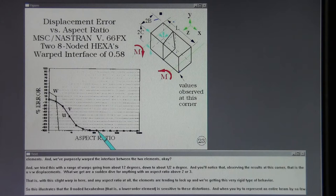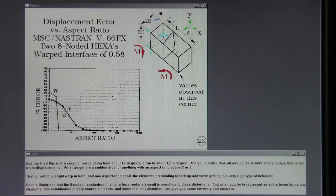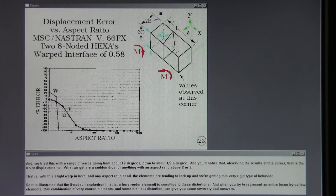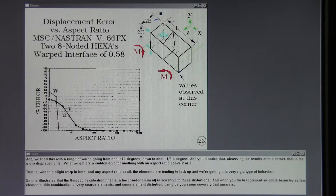So this illustrates that the eight-noded hexahedron, that is a lower-order element, is sensitive to these distortions. And when you try to represent an entire beam by so few elements, this combination of very coarse elements and some element distortion can give you some severely bad answers.